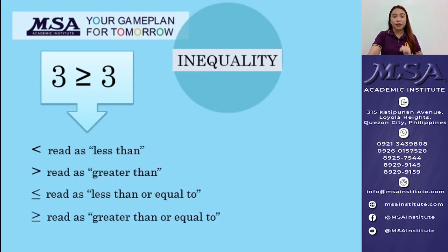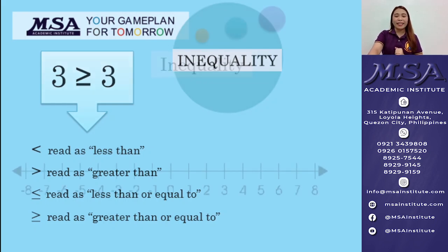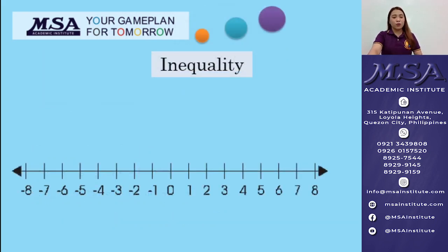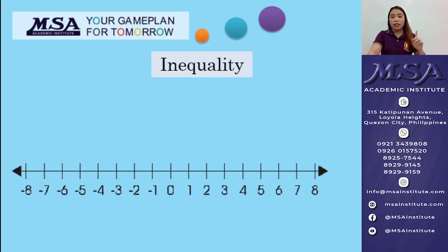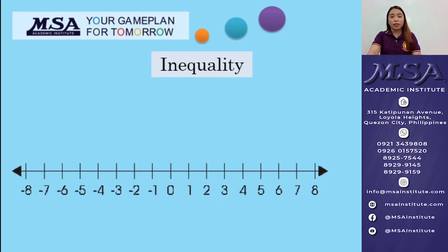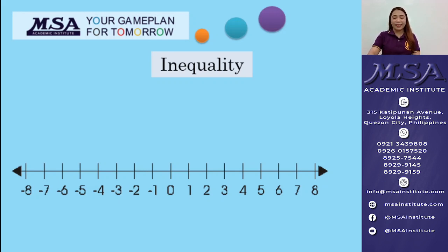And that's still true because 3 is equal to 3. Now, let's try to use a number line to represent an inequality. Take note: a number that is located on the left side of another number is smaller, and a number that is located to the right of another number is larger.